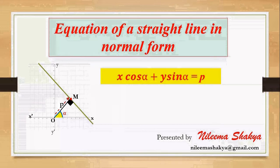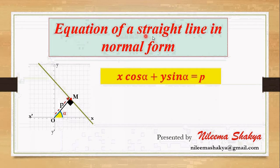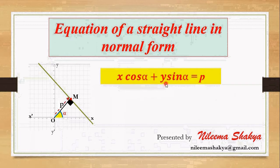Hello students, this is me Neelima Shakya. In today's class we are going to derive the equation of a straight line in normal form, that is x cos alpha plus y sin alpha equals to p.